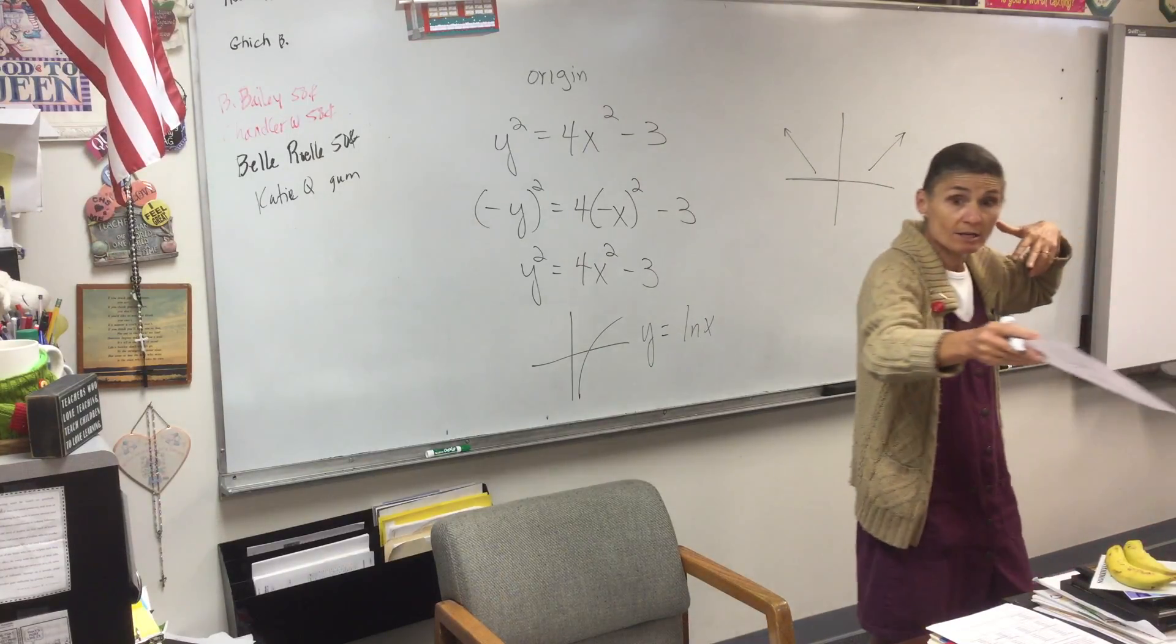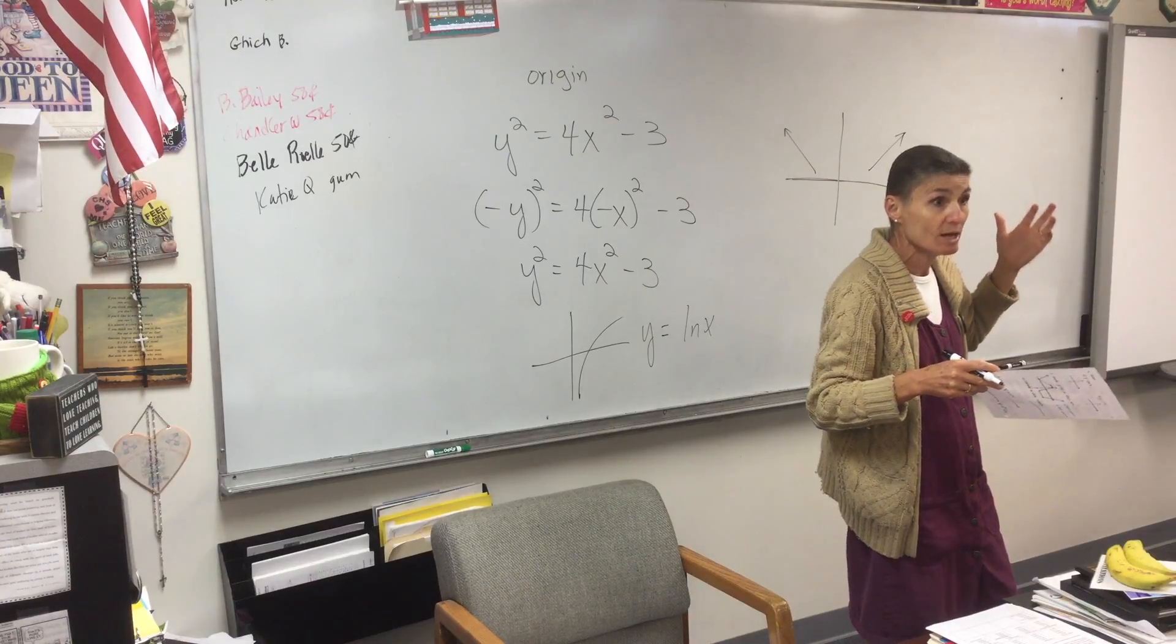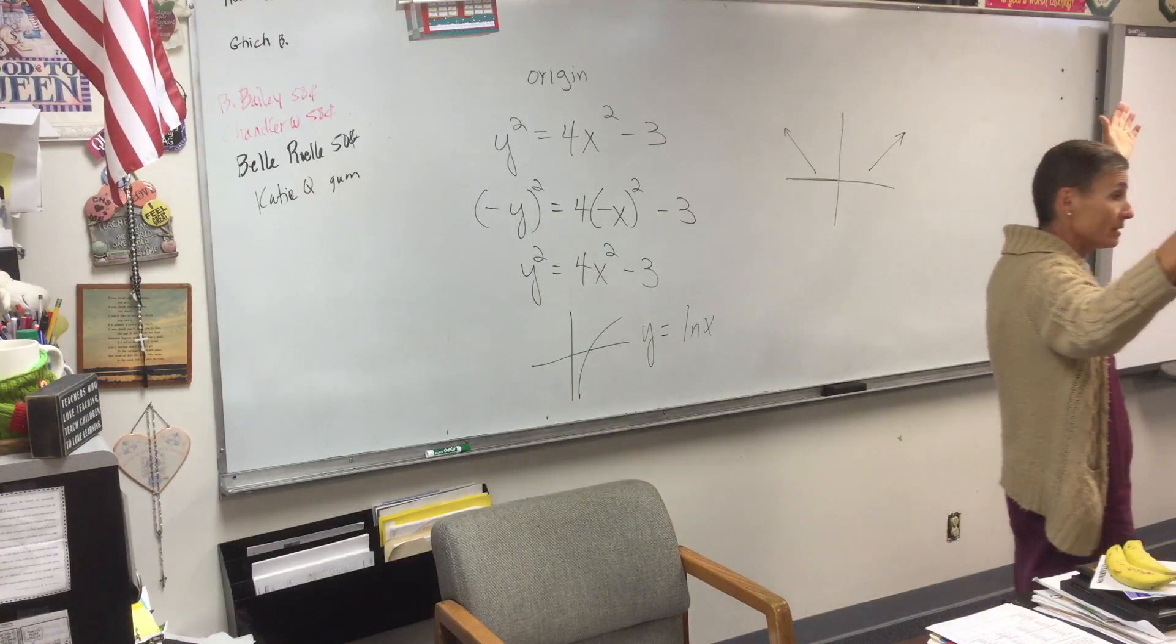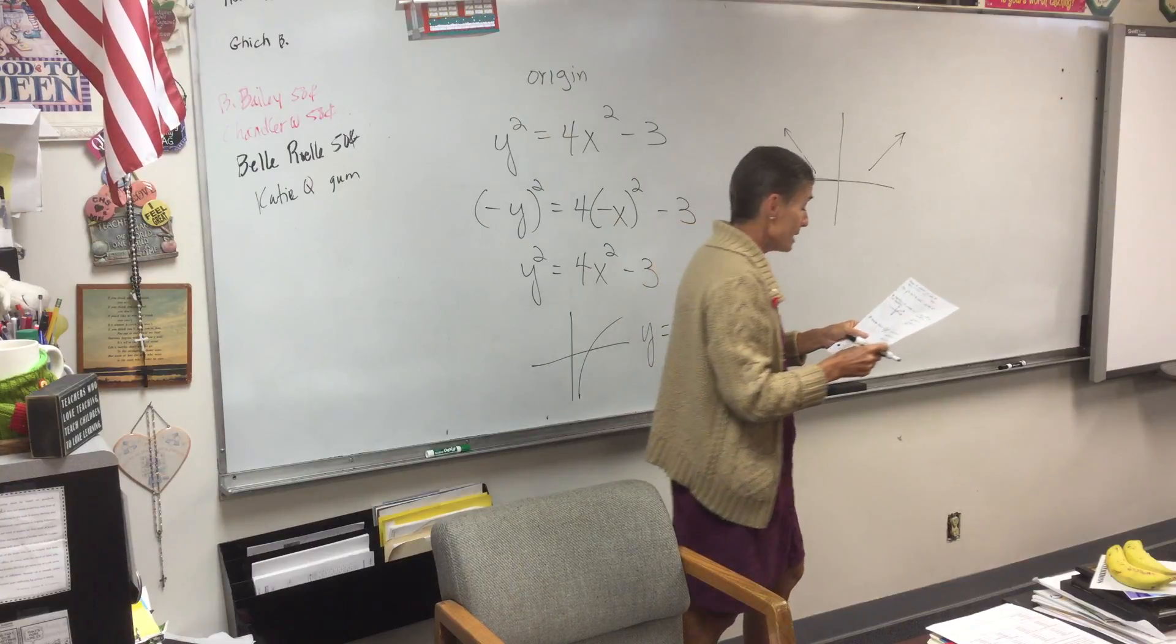X squared, absolute value. Those are the two ones I can think of right off the top of my head. There might be others. But you see what I mean? X squared and absolute value both go up on both sides.